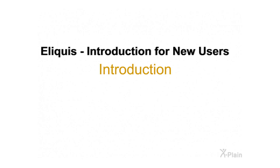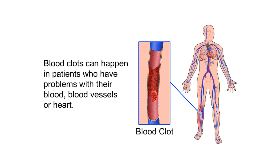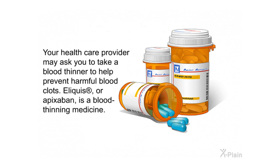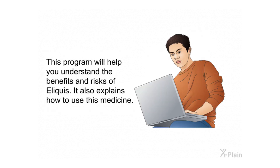Blood clots can happen in patients who have problems with their blood, blood vessels, or heart. Blood clots may be dangerous — they may lead to the loss of an arm or leg, strokes, or death. Your health care provider may ask you to take a blood thinner to help prevent harmful blood clots. Eliquis, or apixaban, is a blood thinning medicine. This program will help you understand the benefits and risks of Eliquis and how to use this medicine.